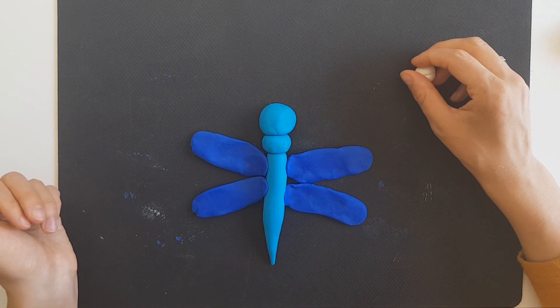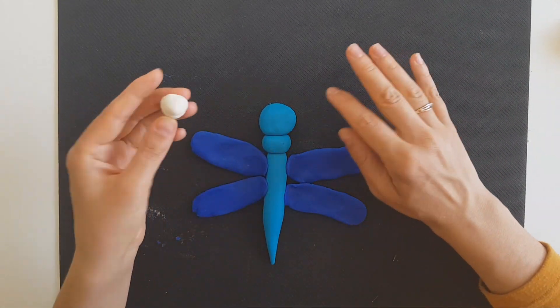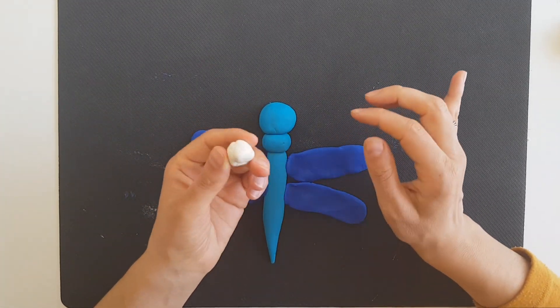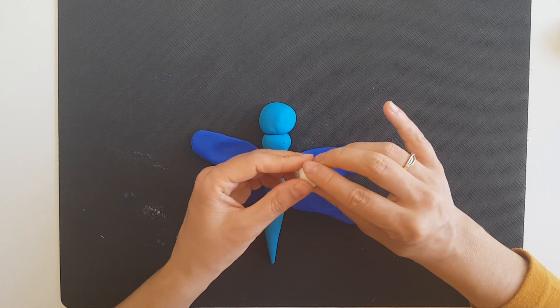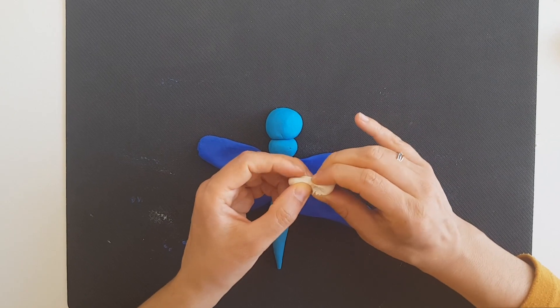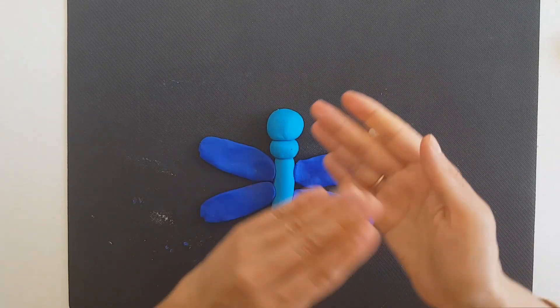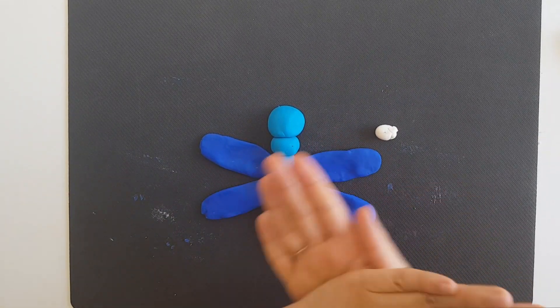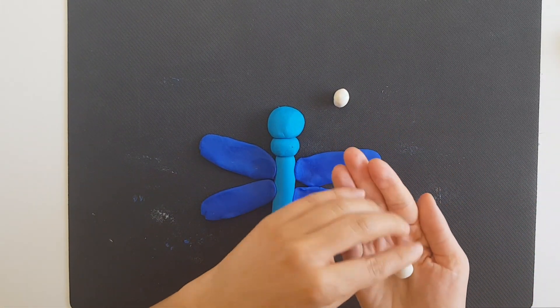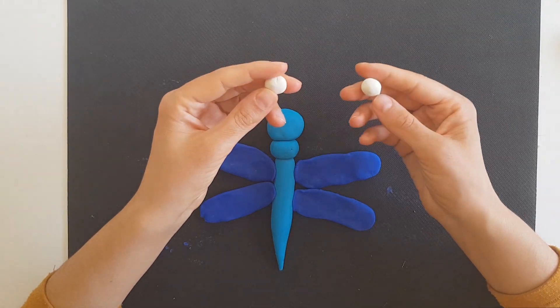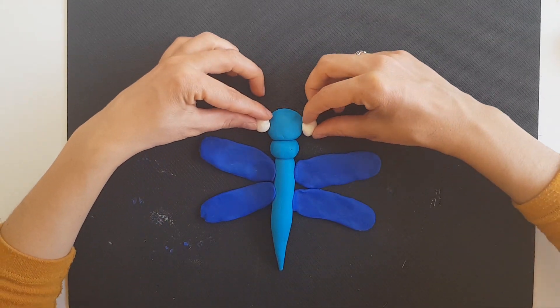Now let's make the eyes. I will use this play-doh. You don't need too much, so let's divide it into pieces. Let's roll. When you are ready, put them on the side.